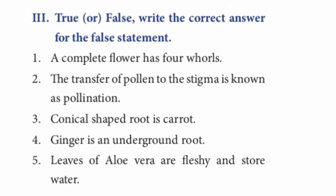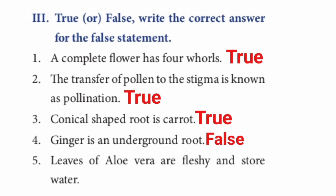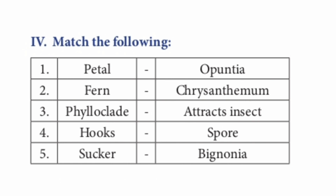Roman numeral III: State true or false; if false, correct the statement. 1. A complete flower has 4 whorls — true. 2. The transfer of pollen to the stigma is known as pollination — true. 3. Conical shaped root is carrot — true. 4. Ginger is an underground root — false. Ginger is an underground stem. 5. Leaves of aloe vera are fleshy and store water — true.